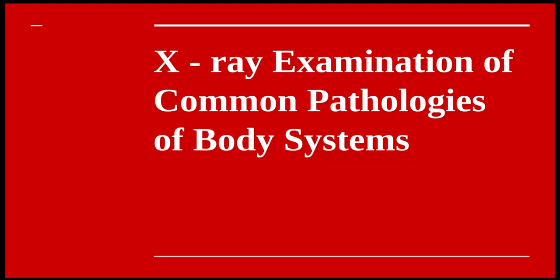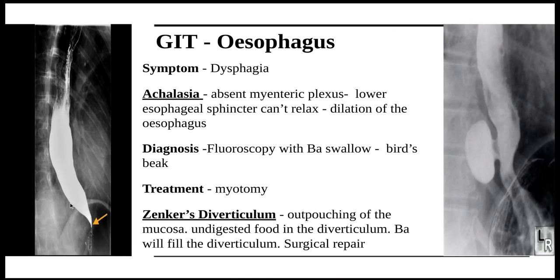Starting off with the gastrointestinal tract — the esophagus. The most common symptom seen in esophageal pathologies is dysphagia. I'll be mainly focusing on achalasia and Zenker's diverticulum. Achalasia is the absence of a myenteric plexus, so the lower esophageal sphincter cannot relax properly, causing the esophagus to dilate. This is diagnosed by fluoroscopy with barium swallow, and as seen on the diagram there will be a bird's beak appearance. This is usually treated with a myotomy.